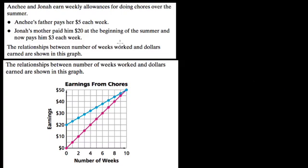Alright, this problem we've got two people and they have allowances for doing chores each week. Here are the pay rates. The first person is paid $5 each week. I guess the name there is Anchi, $5 each week.